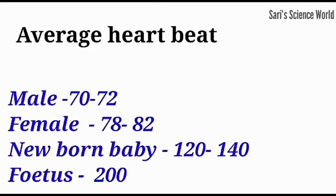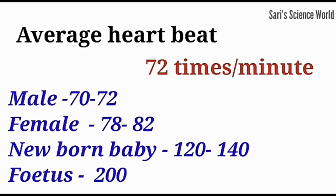The average heartbeat is 72 times per minute. In males it is 70 to 72 times, in females it is 78 to 82 times, in a newborn baby it is 120 to 140 times, and in a fetus it is 200 times.